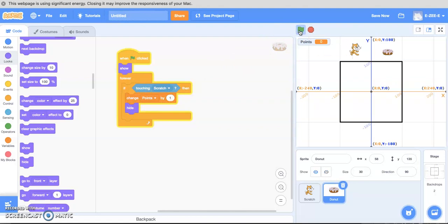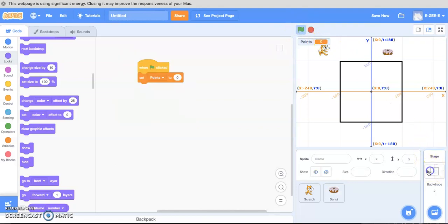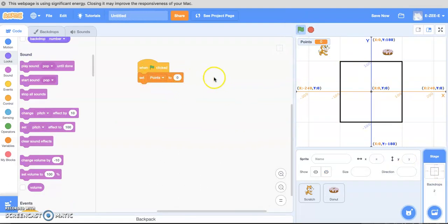Okay. Donut's back. Scratch is moving over. And points by one. Click the game. Resets our points to zero, which is in the backdrop. Set points to zero. Okay. This is working all right.